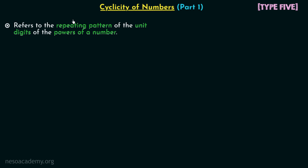For example, let's say we have a number N raised to the power n. When we start increasing the power n, we will find the results will have a repeating pattern of the unit digits — or we can say the unit digits will follow a predictable cycle. There will be a cycle at the unit place of various powers of a number, and this we call the cyclicity of a number.